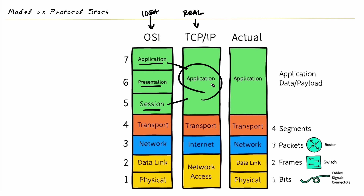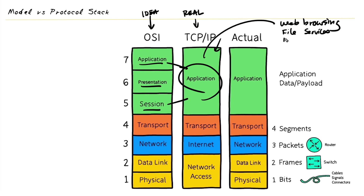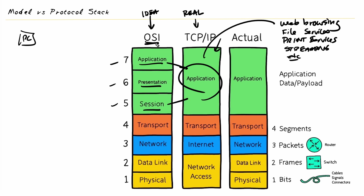So if you see documentation talking about layer seven or the application layer, what it's really referring to is this green section in the TCP/IP protocol stack. Examples of application layer services include web browsing, file services, printing, and streaming services. There's a very long list of applications or services we might want to use from our PC. In the TCP/IP protocol stack, this one layer represents layers seven, six, and five from the OSI reference model.